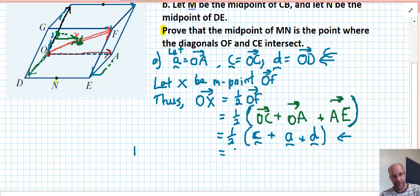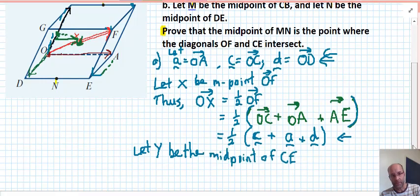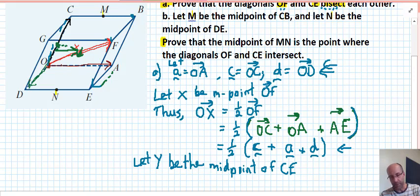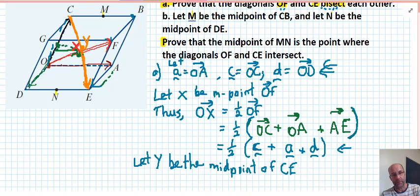So we need to let another point, let's call it Y, be the midpoint of CE. So we've got two vectors, one in red and one in orange. And let Y be the midpoint. Now, perhaps intuitively you think it's going to be the same point as that X that you can barely see now. I'm just going to put it next to it, as in it could be the same point, but we haven't proven that. So we haven't proven that they're the same point, but you know what, that's what we're trying to do.